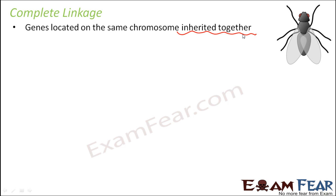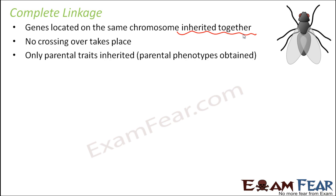The recombinants are very few; sometimes there are no recombinants at all. No crossing over takes place, and if there is no crossing over there is going to be no recombinations. Only parental traits will be inherited — the offspring will have the parental phenotypes, and there will be no new traits produced.